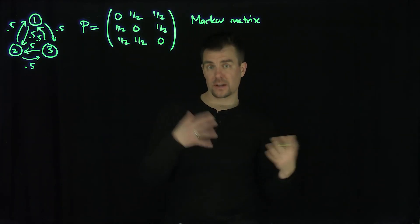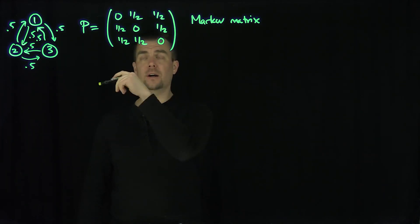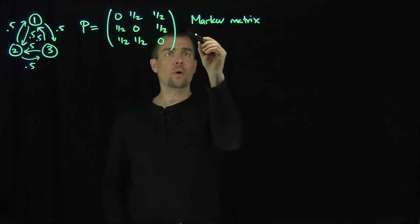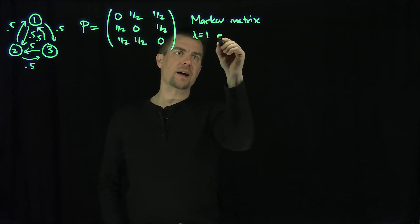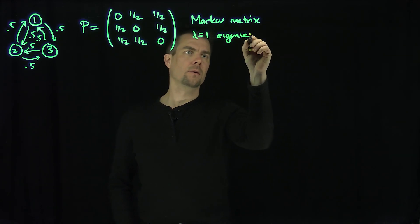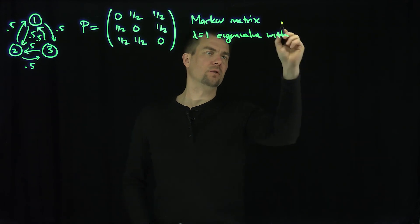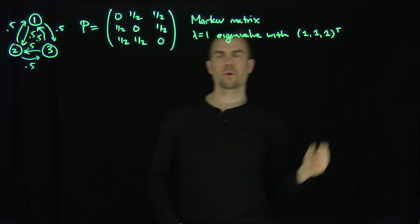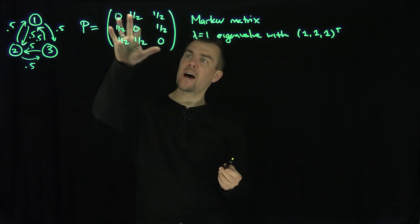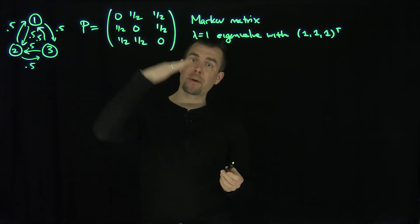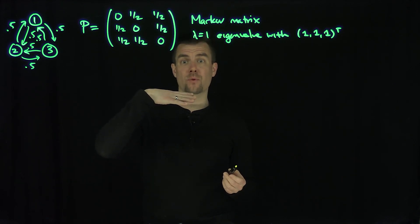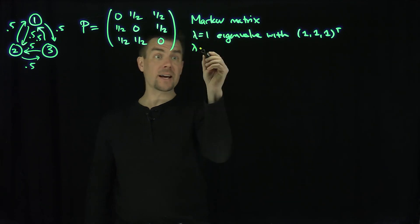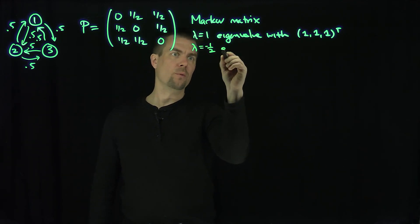I want to know the long-time behavior of this chain — the equilibrium distribution, or the steady-state distribution. We can note that λ=1 is an eigenvalue — this is always true for Markov chains — with eigenvector [1, 1, 1] transpose. And we can see that if I had one-half on the diagonal, I'd have a matrix with one-halves everywhere, which would be a rank-1 matrix. So I know from that analysis that λ = -1/2 will be an eigenvalue.